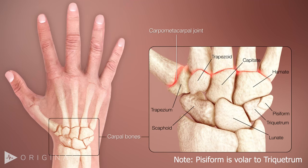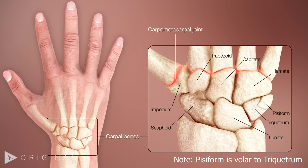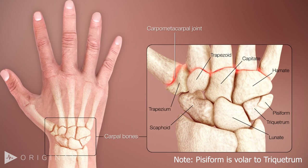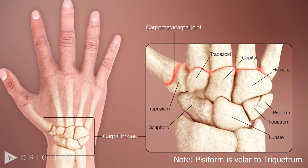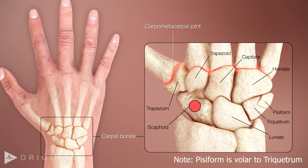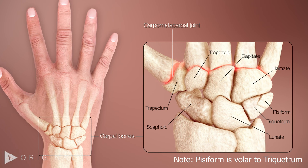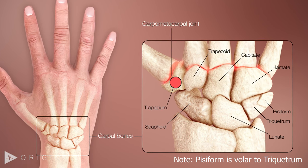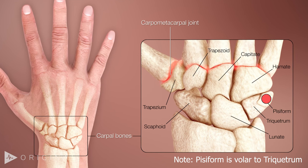When you think of the wrist, there are essentially two rows of carpal bones: the proximal and the distal carpal row, each with four bones. The proximal carpal row comprises the scaphoid, lunate, and triquetrum. The distal carpal row comprises the hamate, capitate, trapezoid, and trapezium. On the volar side of the proximal carpal row is the pisiform.